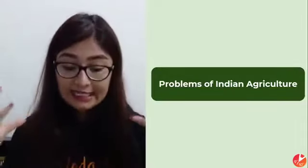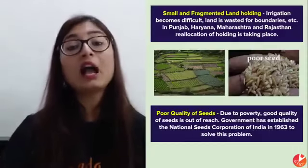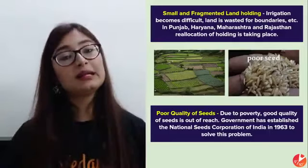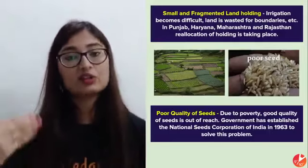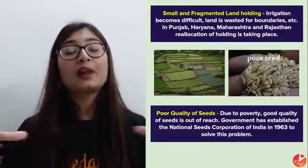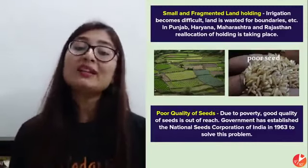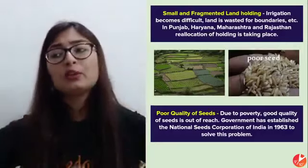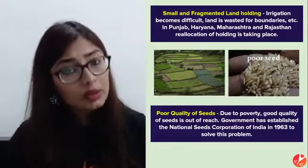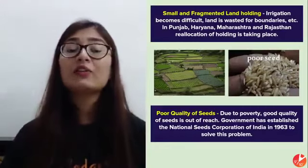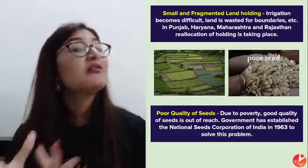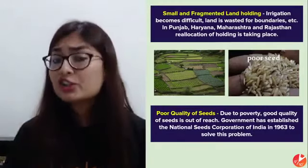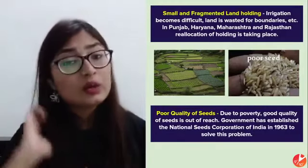Now let's look at the problems of Indian agriculture. First, no matter how large a piece of land is, as it is inherited generation by generation, it gets fragmented — land holdings become smaller and smaller. With small fragmented land, you cannot invest more capital, you cannot produce more, and you cannot achieve better yields.